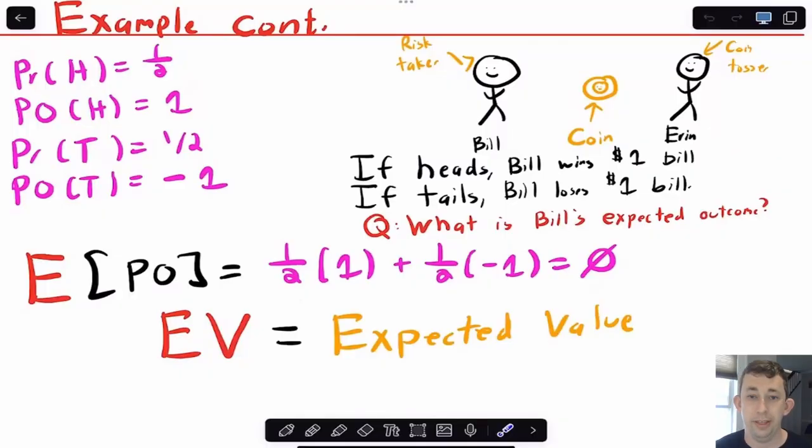By thinking about it, the expected value is clearly zero because there's a 50% chance that Bill gets one, and a 50% chance that Bill gets negative one, so we add those up and get to an expected value of zero. The expected value is basically the sum of the probability that it's heads times the payoff if heads, plus the probability that it's tails times the payoff of getting tails.